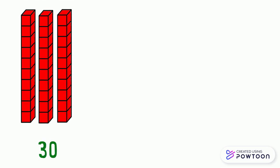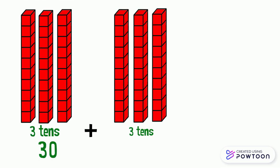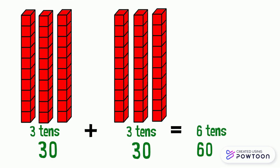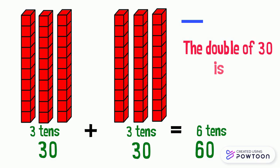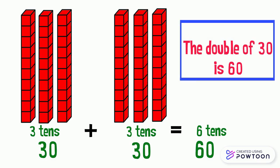Now we are going to calculate the double of 30. The number 30 is made up of 3 tens. So the double of 3 tens is 3 tens plus 3 tens equals 6 tens. So the double of 30 is 60, because 30 plus 30 equals 60.